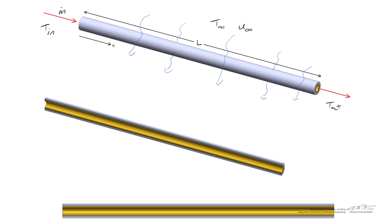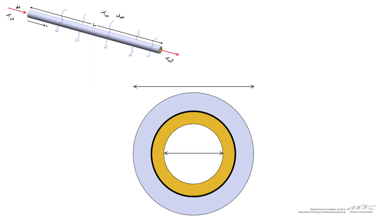The pipe itself is built up of a number of layers: an inner conductive layer, a contact resistance, and then an outer conductive layer. When we examine a cross section of the pipe, we know the inner diameter, the outer diameter, the inner radius r1, and the radii r2 and r3, where r3 equals the outer diameter divided by 2 and the inner radius equals the inner diameter divided by 2.